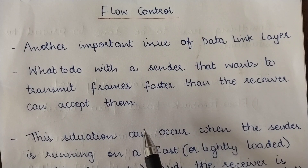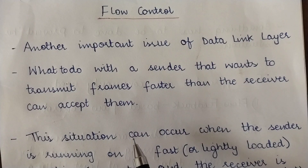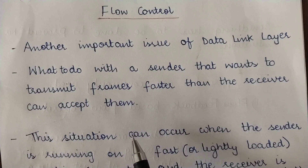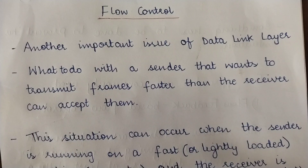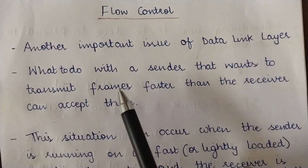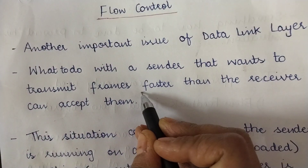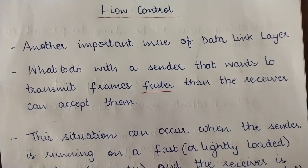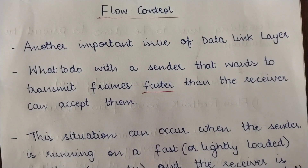To understand this, consider a hypothetical situation where the sender is capable of sending 10 frames per unit of time, but the receiver can only receive 5 frames per unit of time — the receiver is a bit slow. So what do we do when the sender wants to transmit frames faster than the receiver can accept them? This means the processing capability of the receiver is slower than that of the sender.